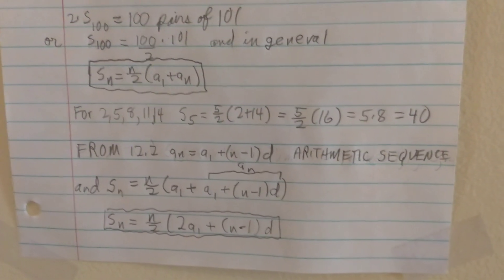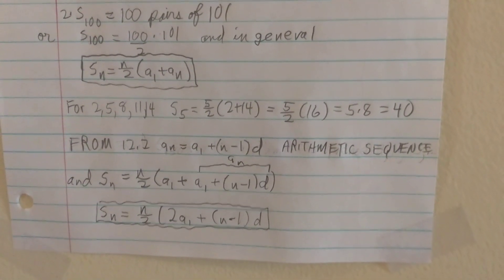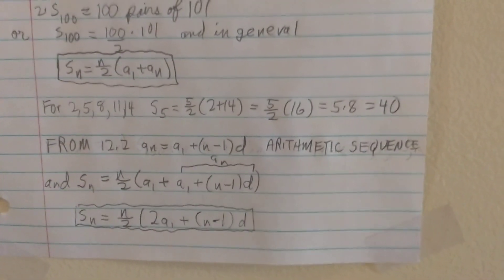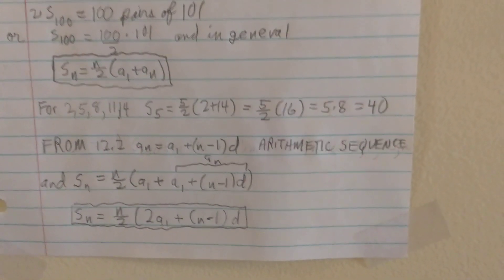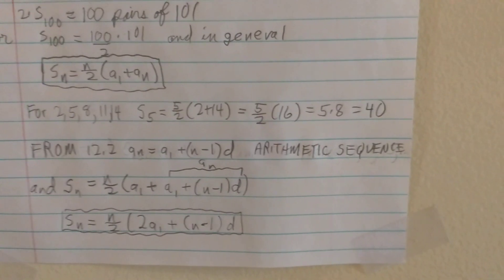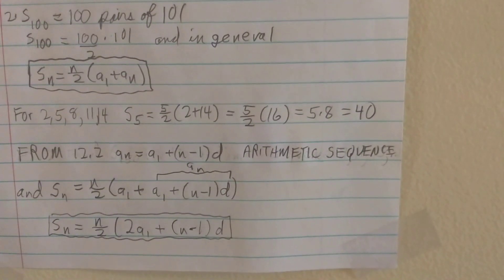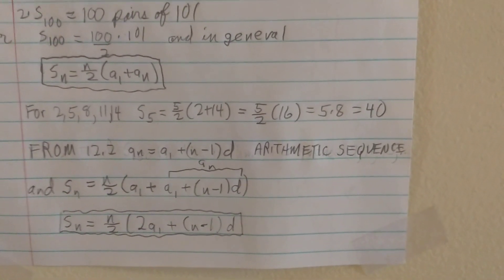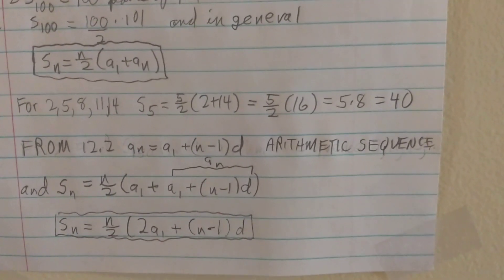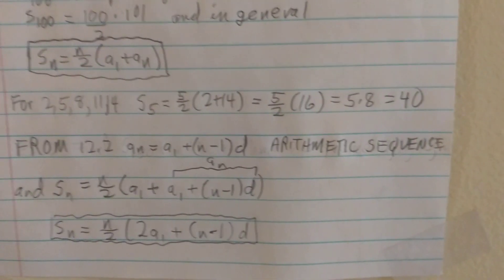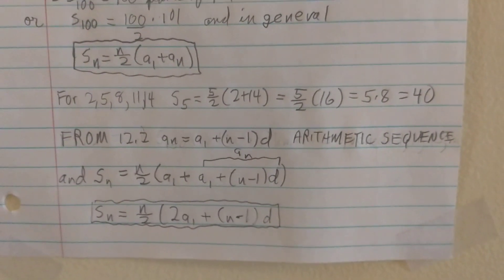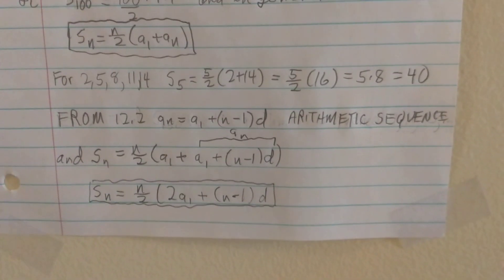So if I do this procedure for the series 2, 5, 8, 11, 14, I would use S sub 5 as 5 over 2 times the first term 2 plus the last term 14, which gives me 5 over 2 times 16. Since 16 over 2 is 8, and 5 times 8 is 40, we confirm our earlier answer.